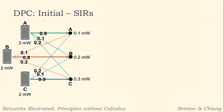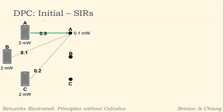The first thing we have to do is find the initial signal-to-interference ratios, so we can move on to the first iteration to compute the updated power levels, then recompute the signal-to-interference ratios, and so on. We'll start with link A. Link A has a direct gain of 0.9 and a transmit power of 2 milliwatts. Remember that the signal-to-interference ratio is signal over interference plus noise.